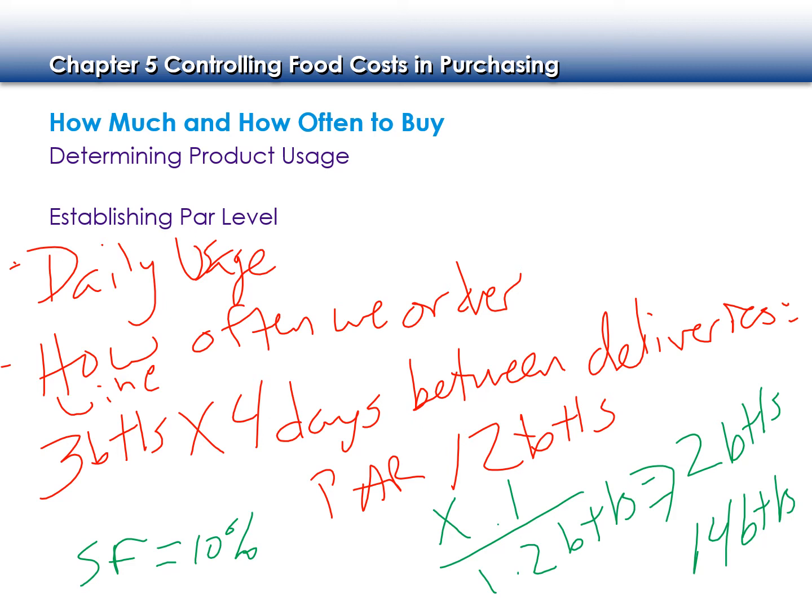That's essentially how we figure out our par level. For every ingredient item that we have, we need to have an established par so that we know how much to order.